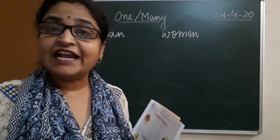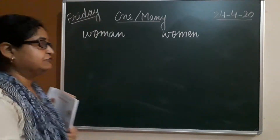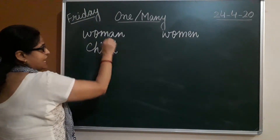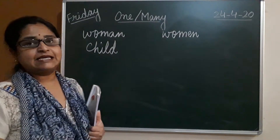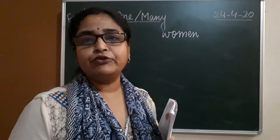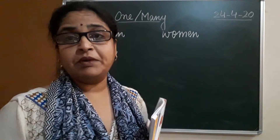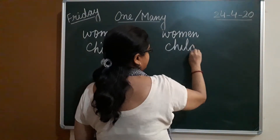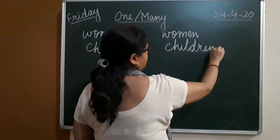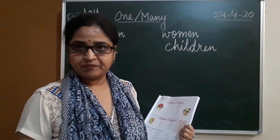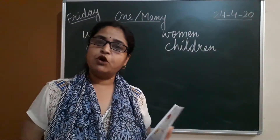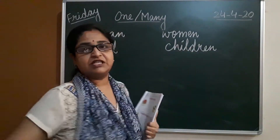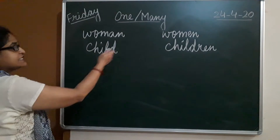The next one is 'child'. When the word child is there, you don't put S, ES, or IES to make it plural. But you write 'children'. Child becomes children when you talk about many children together.